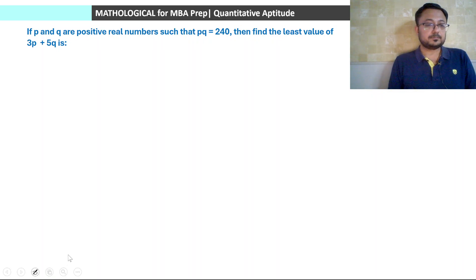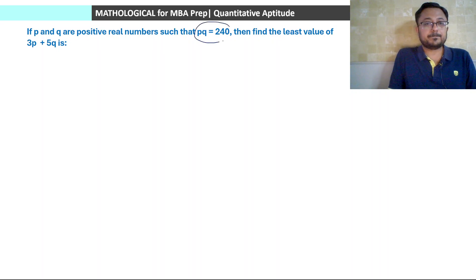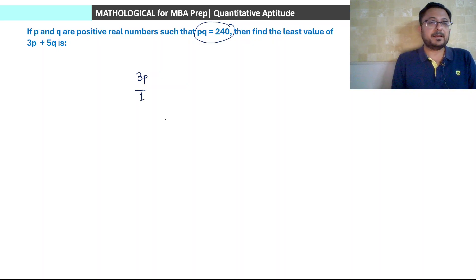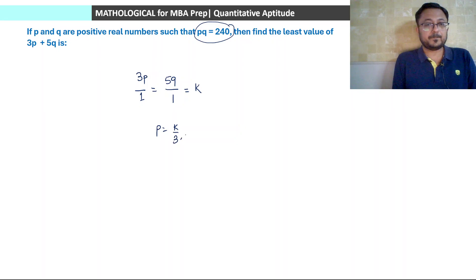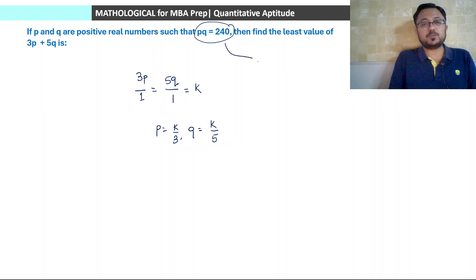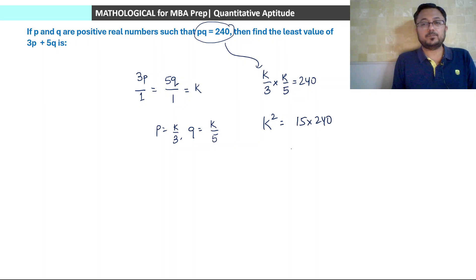Next question: if p and q are positive real numbers such that p into q is 240, then find the least value of 3p plus 5q. Since p and q both have power one, no breaking is needed. Set 3p by 1 equal to 5q by 1 equal to k. So 3p equals k and 5q equals k, giving p equal to k by 3 and q equal to k by 5. Substituting: k by 3 into k by 5 equals 240, so k² equals 15 times 240 equals 3600, giving k equal to 60.